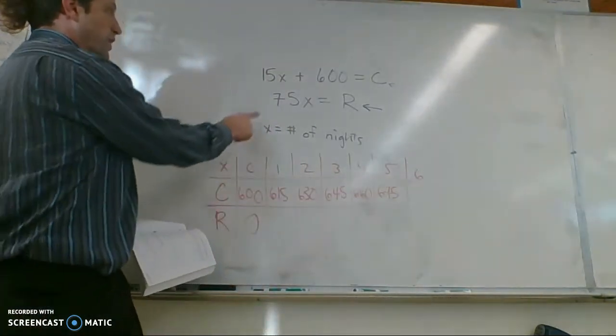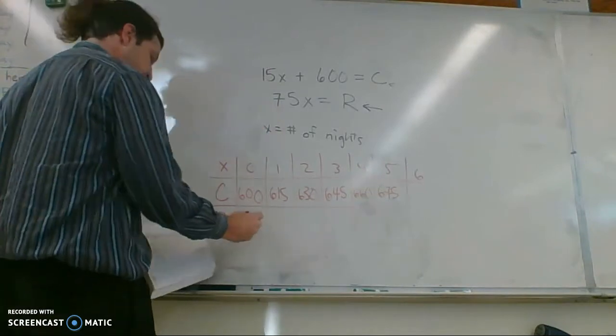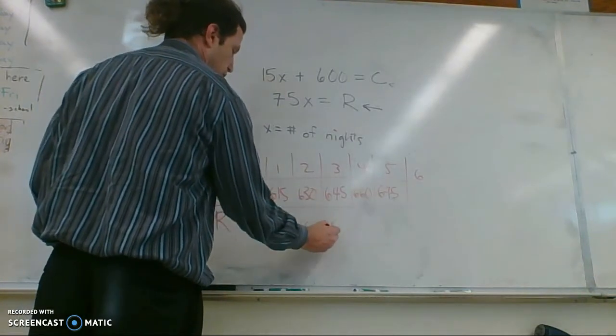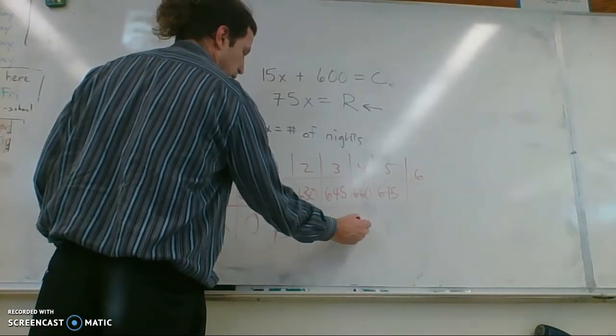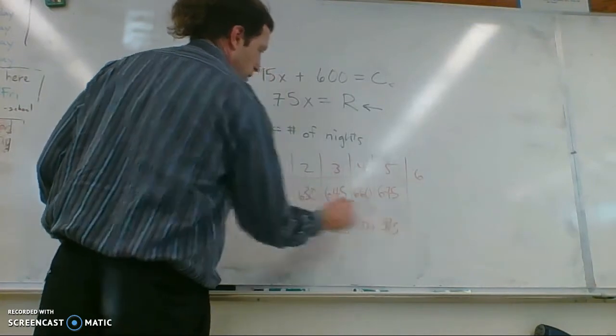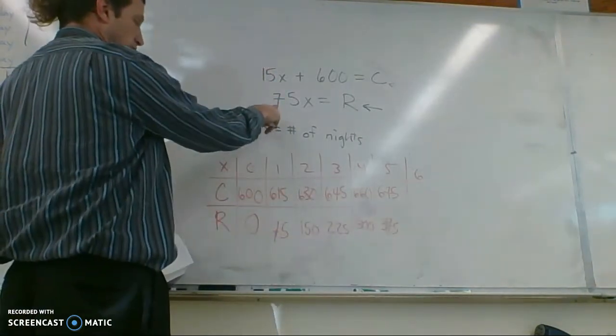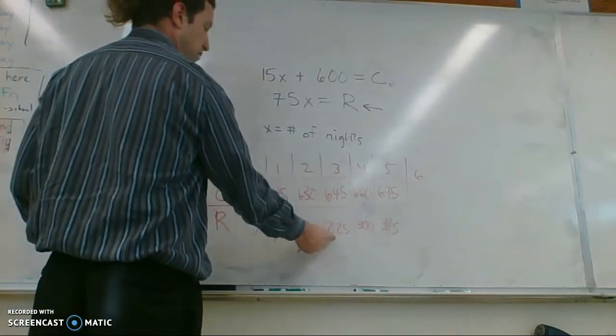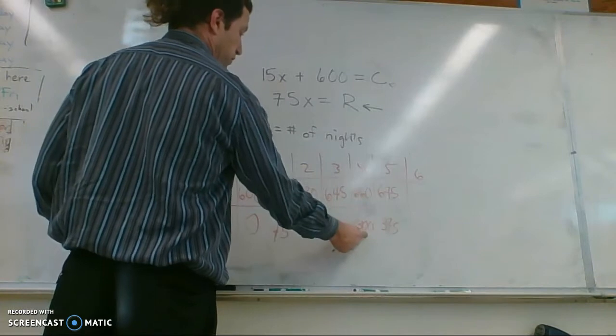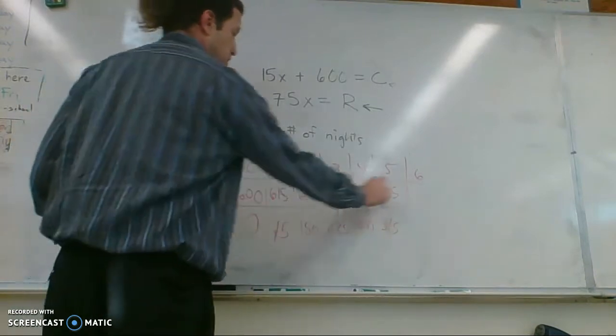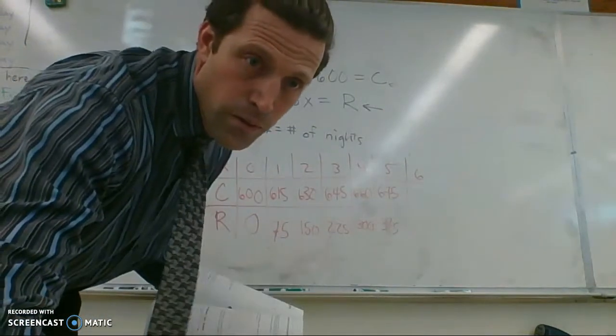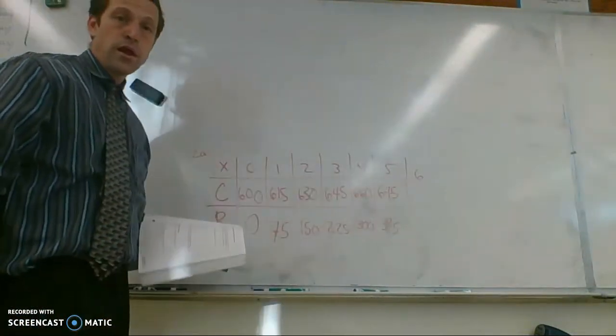Meanwhile, your revenue is going up $75 a night. So $75, $150, $225. You can use this in your calculator. You're just plugging this number into this equation, right? $75 times 3 is $225. $75 times 4 is $300. And up here, I was just plugging it into this equation, $15x plus $600.